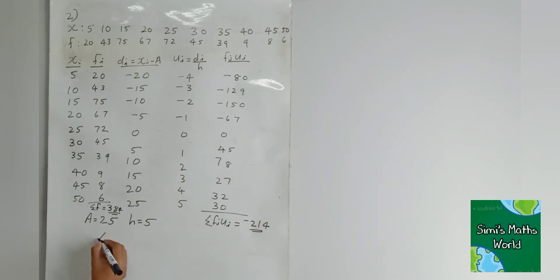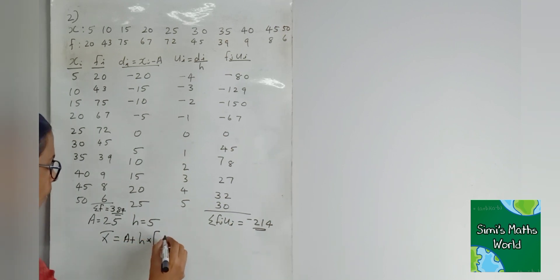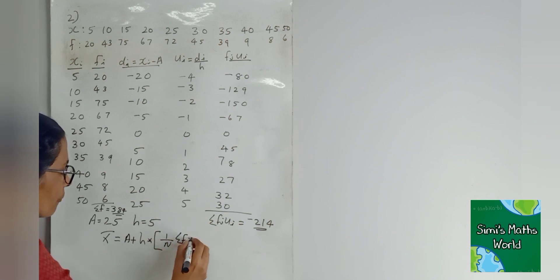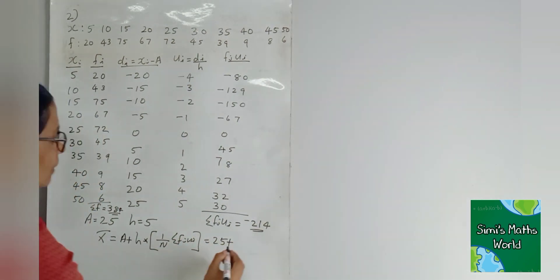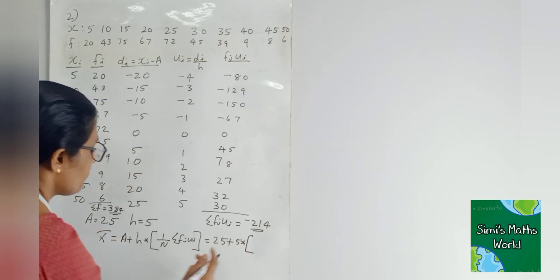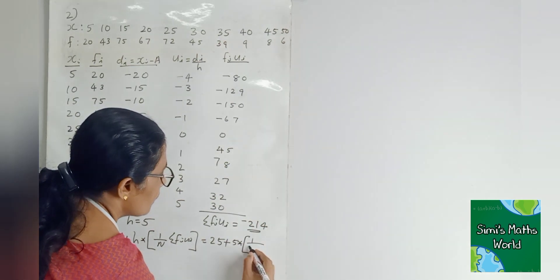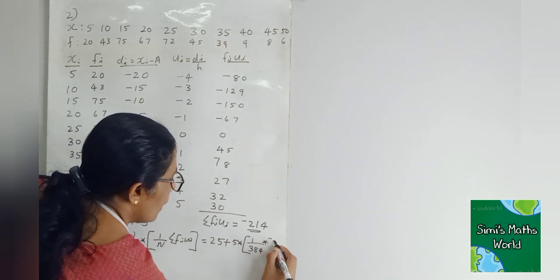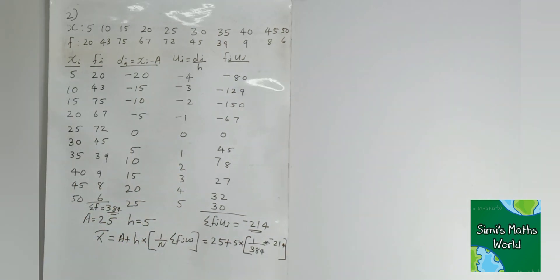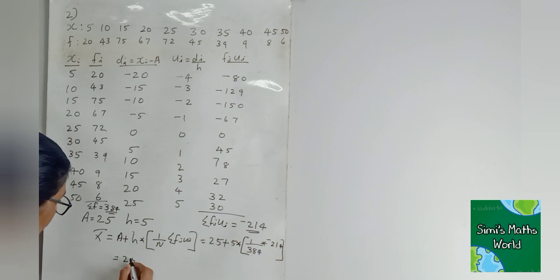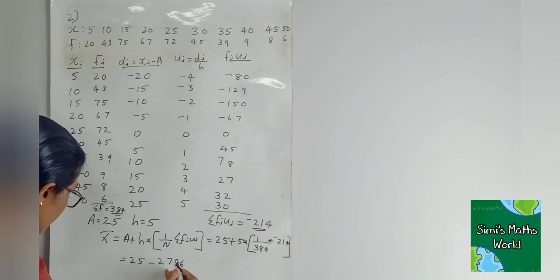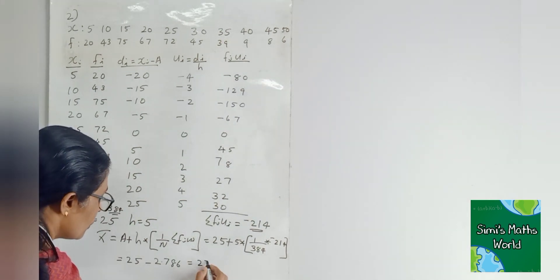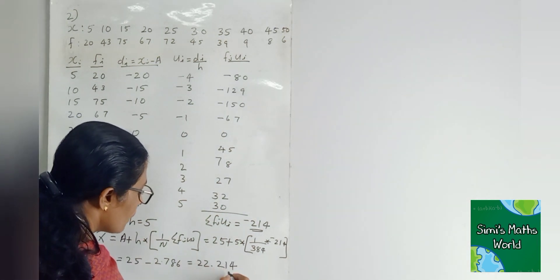Arithmetic mean x-bar equals a plus h into (1/n) into sigma fi·ui. With a equal to 25, h equal to 5, n equal to 384, and sigma fi·ui equal to minus 214: x-bar equals 25 plus 5 into (1/384) into minus 214, equals 25 minus 2.786, equals 22.214.